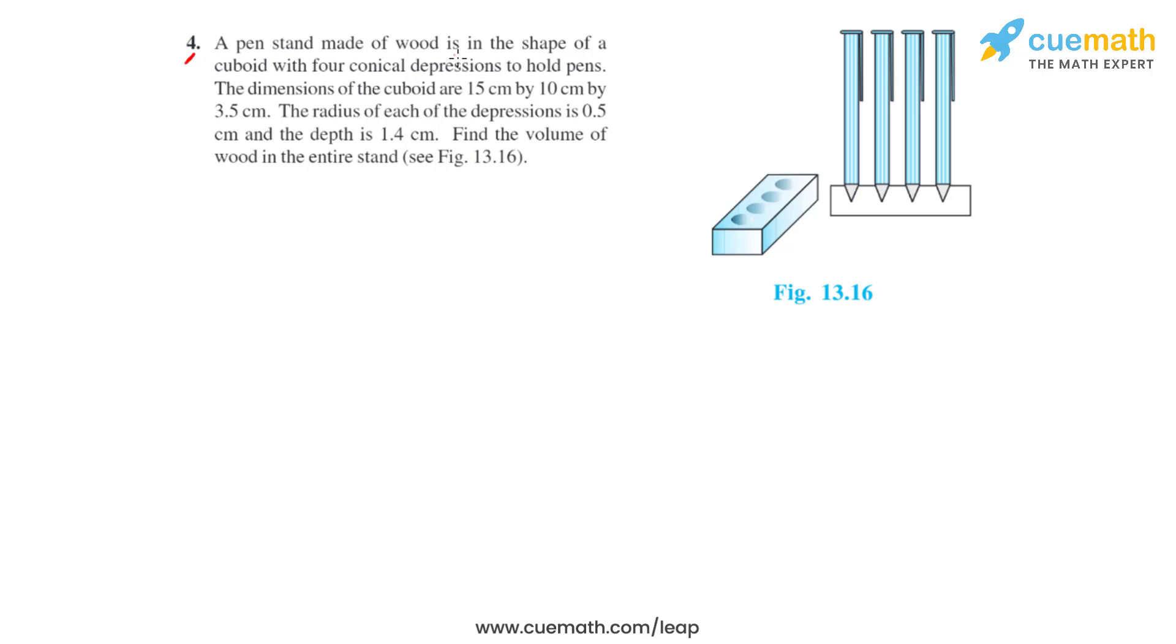Question number 4 says that a pen stand made of wood is in the shape of a cuboid with four conical depressions to hold pens. The dimensions of the cuboid are 15 cm by 10 cm by 3.5 cm.